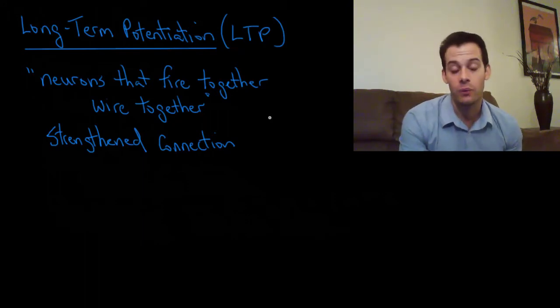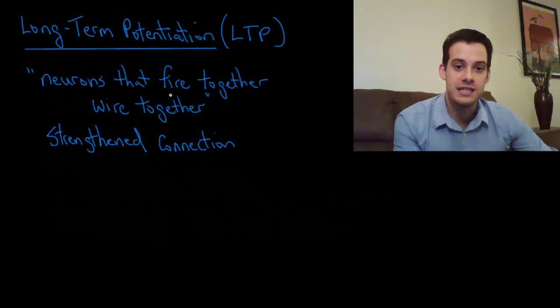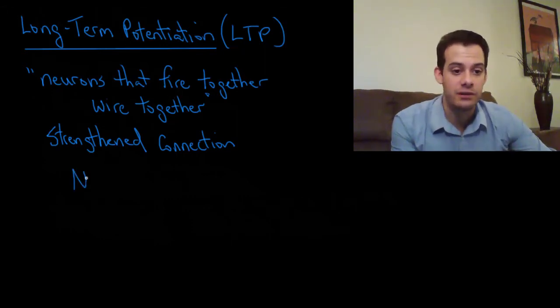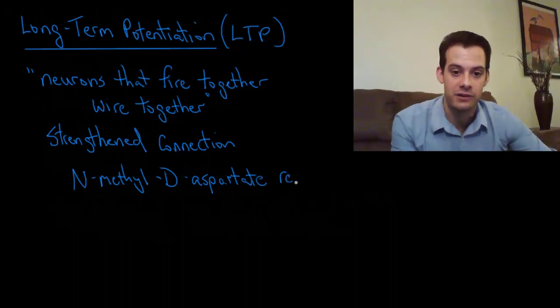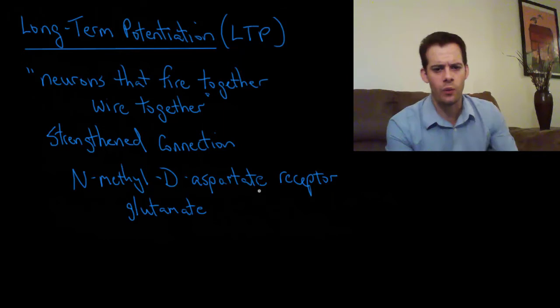So how does this process actually occur? Well, it's not fully understood but one thing that plays a role is a receptor. This is a receptor for something called N-methyl-D-aspartate. So this is a receptor for the neurotransmitter glutamate.